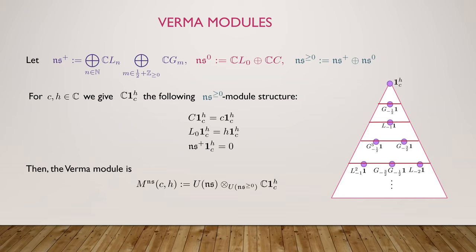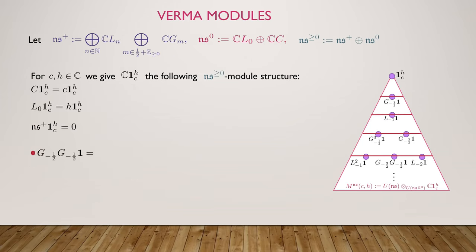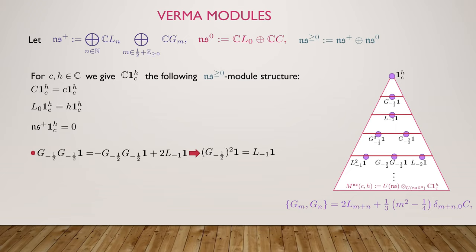Here's a graphical representation of what the Verma module looks like. We have the lowest weight vector and, for instance, L_{-1} on the lowest weight vector, but now we have half-integer things because we've allowed the odd G's to appear. As a warm-up: G_{-1/2} squared really is L_{-1}. By using the anti-commutator with minus one-half, minus one-half, we obtain this relation, and this tells us that G_{-1/2} squared equals L_{-1}. So that's why G_{-1/2} squared is not another independent element at this level.